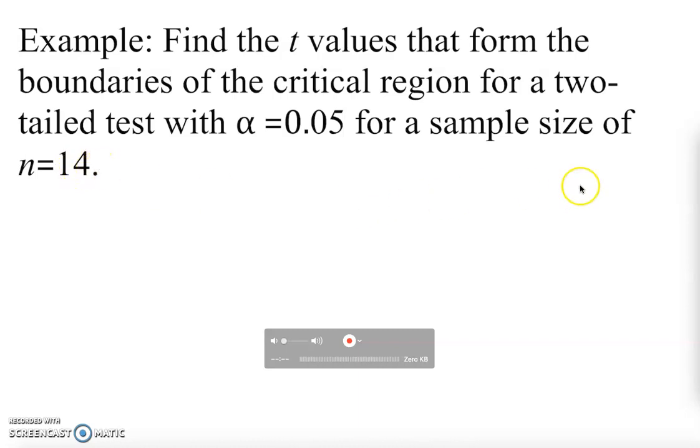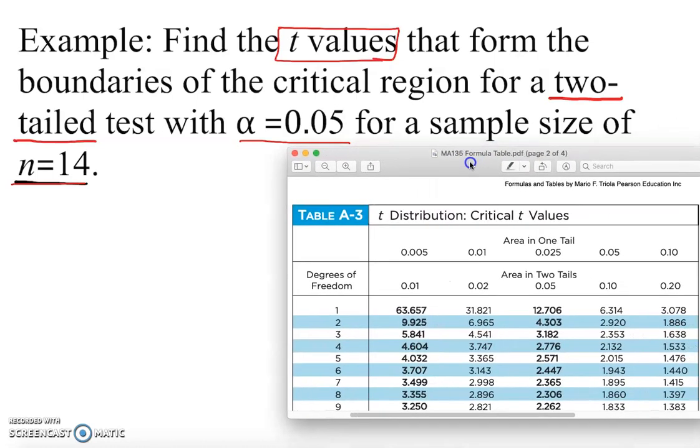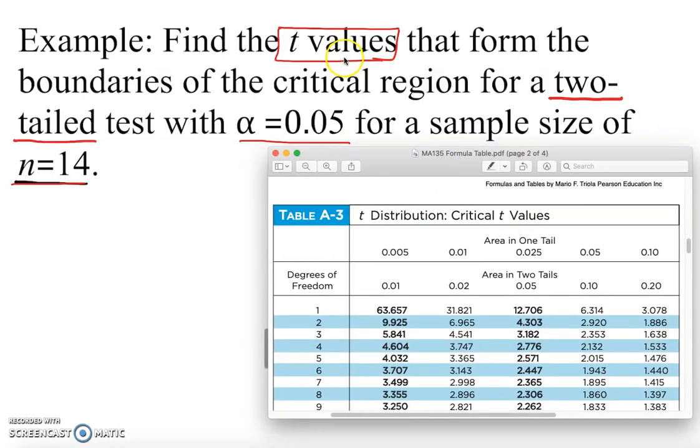So let me list what's given: sample size is given, alpha level is given, and it states two-tailed test. The problem says find the t value, so we're going to find the t value from the t distribution table. This is not confusing - there are z tables and t tables, so we know it's going to be the t table.